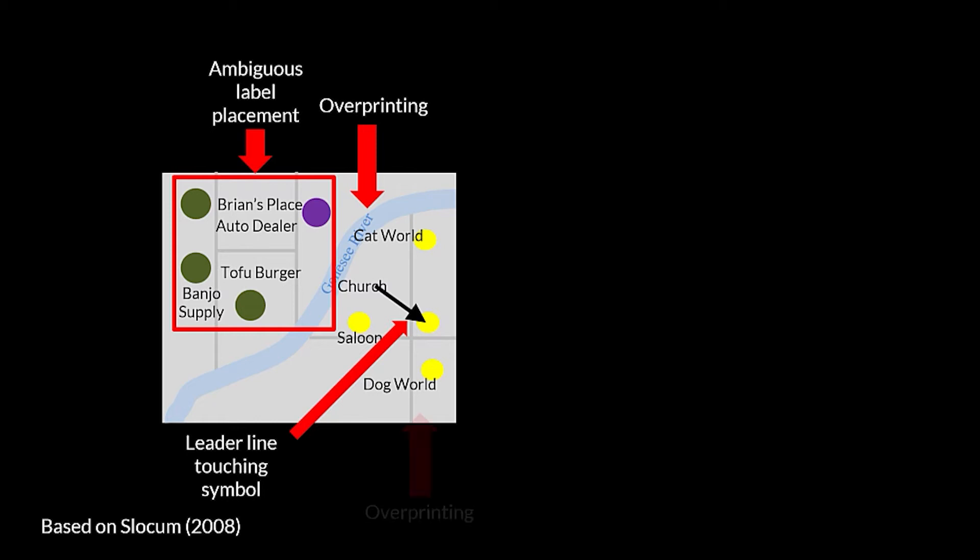Here, we see that the leader line is touching both the symbol and the label. Finally, we see another case of symbol overprinting, this time with a label overprinting across a road symbol. Using the label placement strategy guidelines previously discussed, we can address many of these issues.